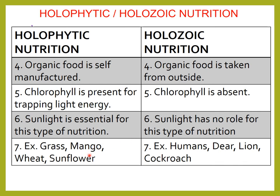Examples of holophytic nutrition: grass, mango, wheat, sunflower, tulsi, maples — many green plants. Examples of holozoic nutrition: humans — we also have holozoic nutrition — deer, lion, cockroach, etc.